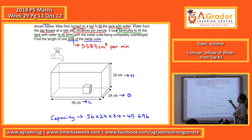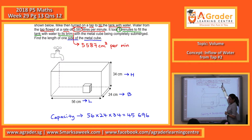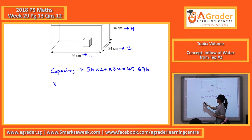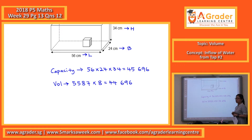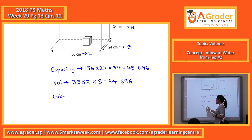Now we find the volume of water that went in. One minute is 5,587 cm cubed. It needs a total of 8 minutes. So the volume of water that went in is 5,587 times 8, which equals 44,696. Then capacity minus volume of water — you minus them — and you get the volume of the cube.